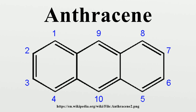Anthracene photodimerizes by the action of UV light. The dimer, called dianthracene, is connected by a pair of new carbon-carbon bonds, the result of the 4+4 cycloaddition. It reverts to anthracene thermally or with UV irradiation below 300 nm. Substituted anthracene derivatives behave similarly.